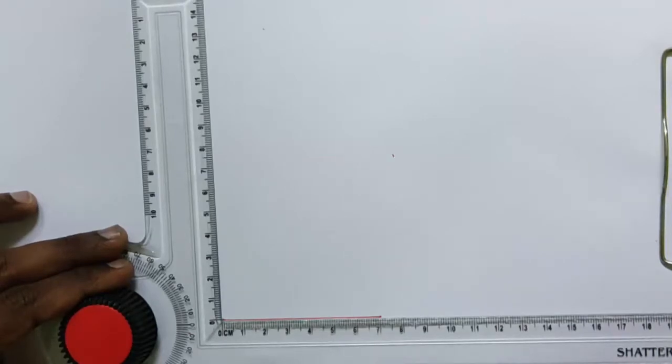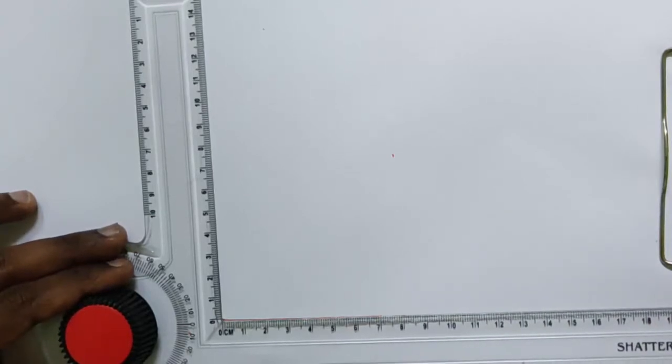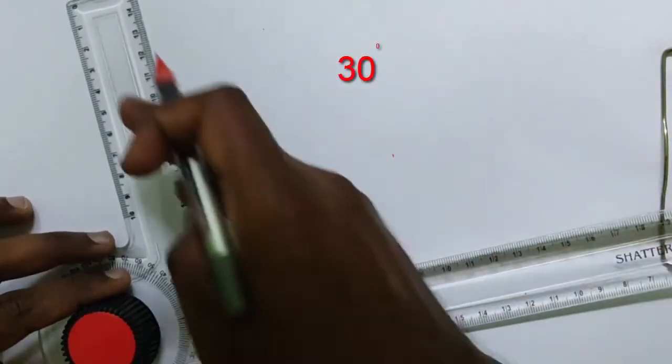We have to take 120 degrees between this because the angle between the edges in a hexagon is 120 degrees. By default, there's 90 degrees between the horizontal and vertical scales. So if I move 30 degrees in the drafter scale, I will get 120 degrees here.